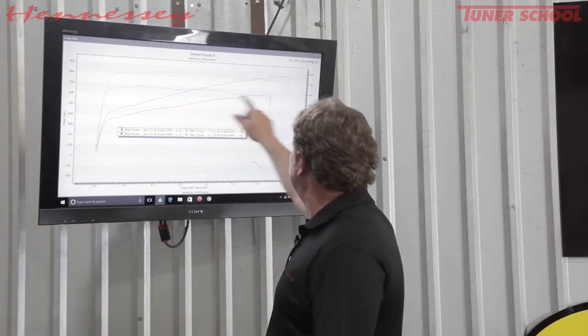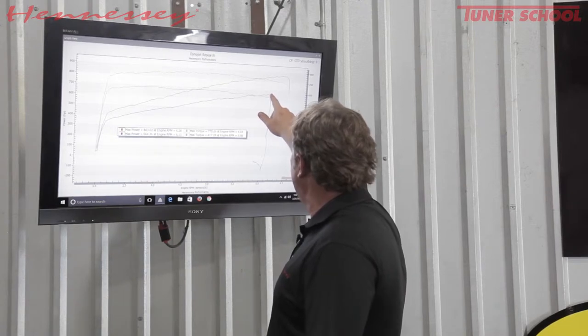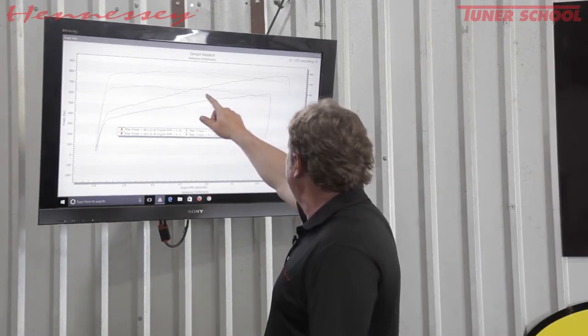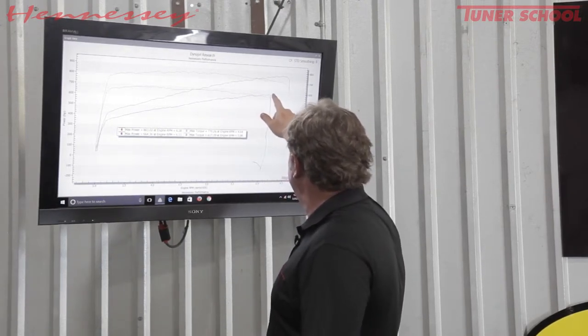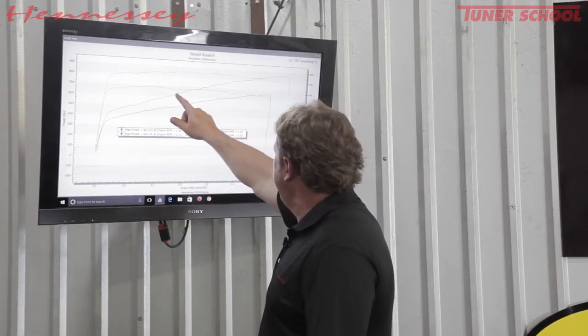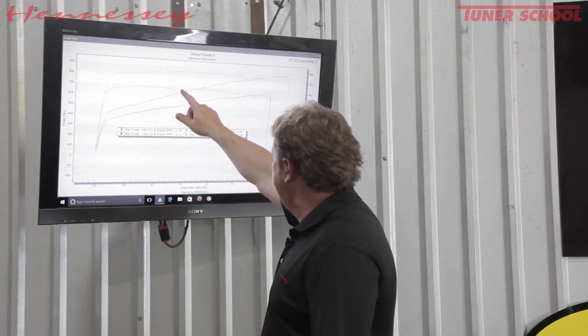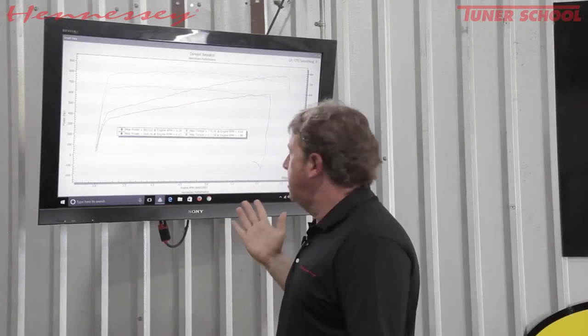Basically the 1000 package, compared to stock, we are making more power than the stock Hellcat. Stock Hellcat makes peak horsepower right at where it shifts, 6200 RPM. The HP1000 is making the same power as the stock Hellcat at 4400 RPM. That's nuts.